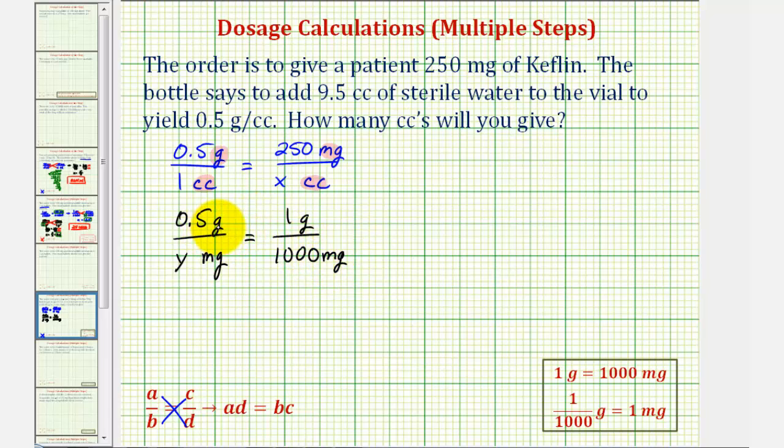Notice how the units are the same on the top and the bottom. Now we'll cross multiply and solve for y, which will give us how many milligrams are in 0.5 grams. When we cross multiply, we will leave off the units to form the equation. So y times 1 must equal 0.5 times 1,000.